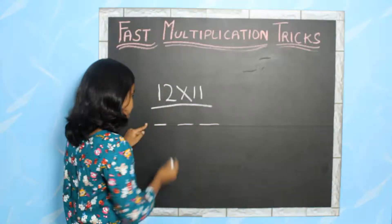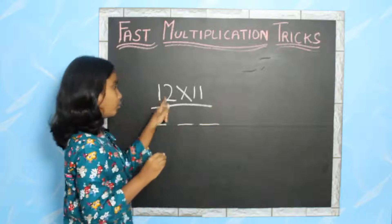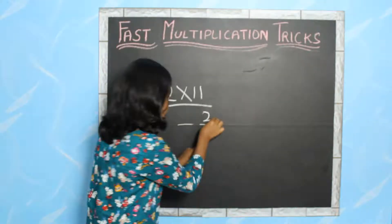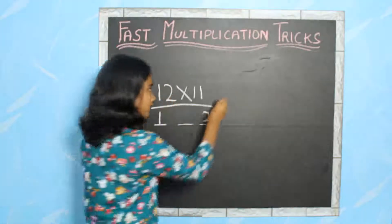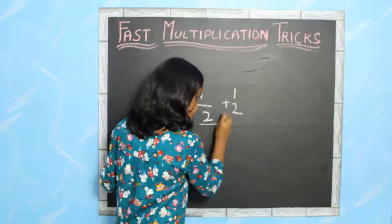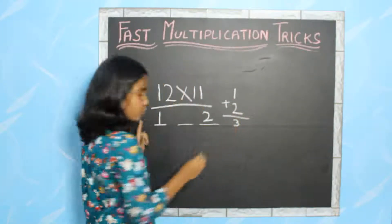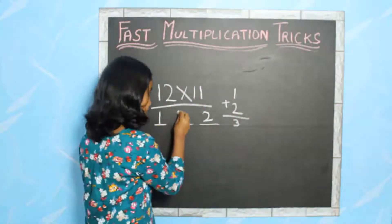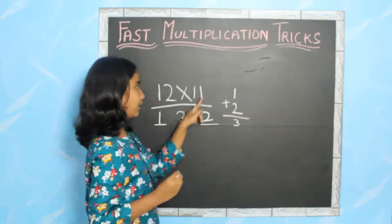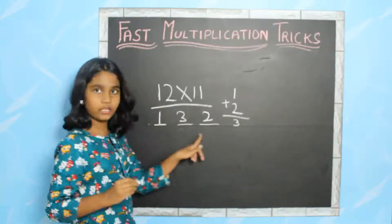I am going to add 1 in the hundreds place and 2 in the ones place. Now I am going to add 1 plus 2, which is 3, and add 3 in the tens place. So 12 into 11 is equal to 132.